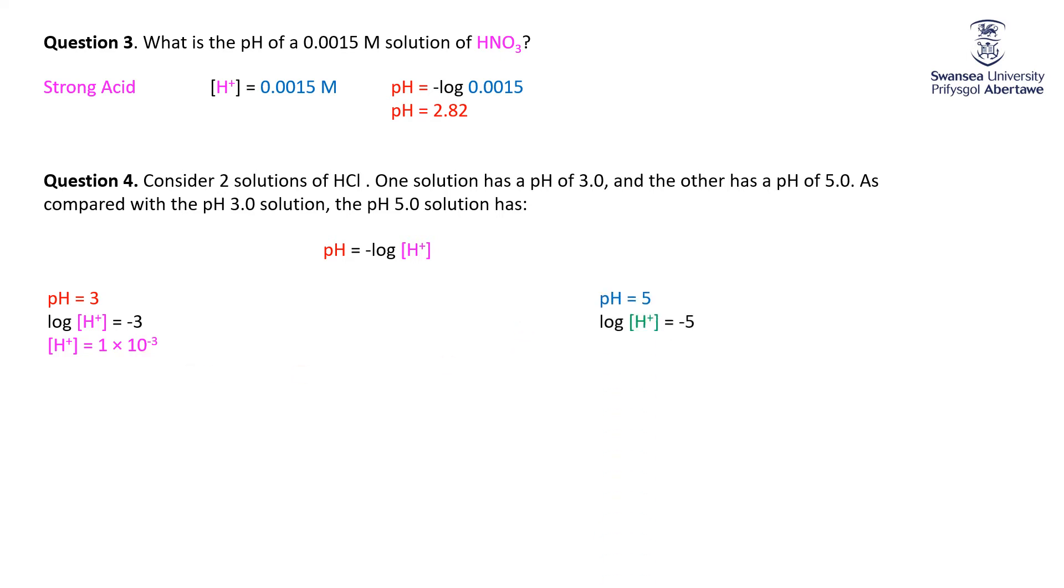pH of 5, same calculations, pop it in. Concentration of H-plus is 1 times 10 to the minus 5. So the pH of 3 has more H-plus than the pH of 5. They are a hundredfold different, 10 to the power of 2 different.